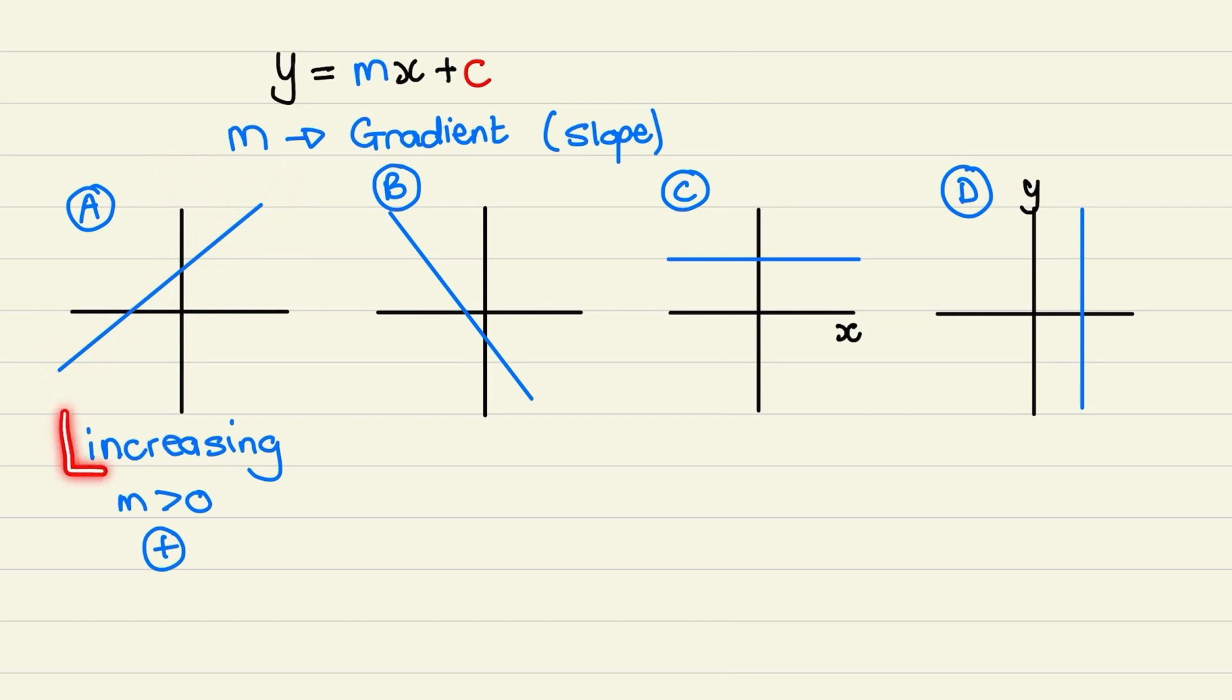So for this function we say that the line is increasing. And when the line is increasing, the gradient is bigger than zero, or we can say that the gradient is positive.